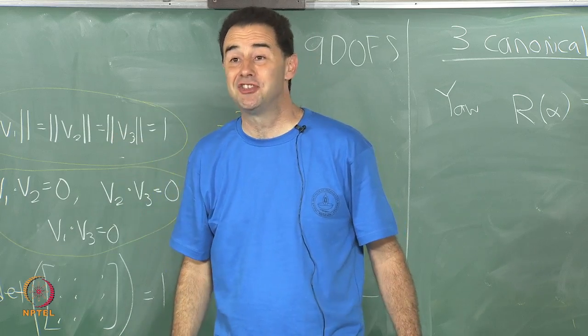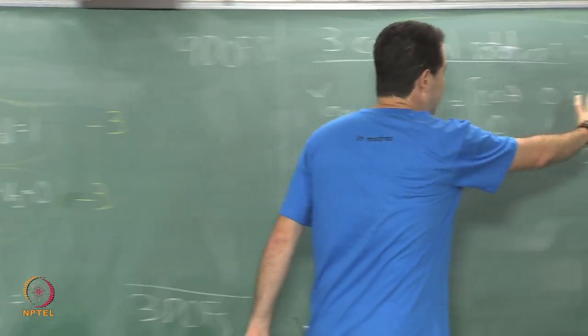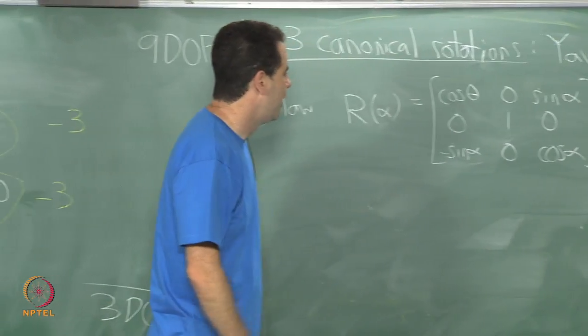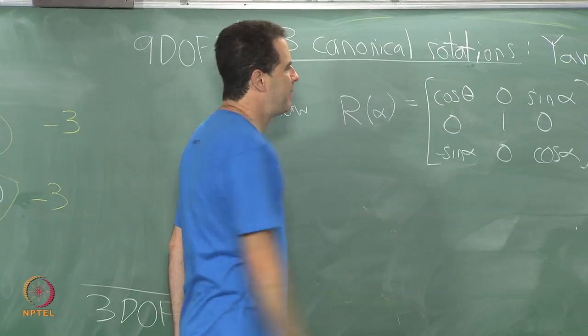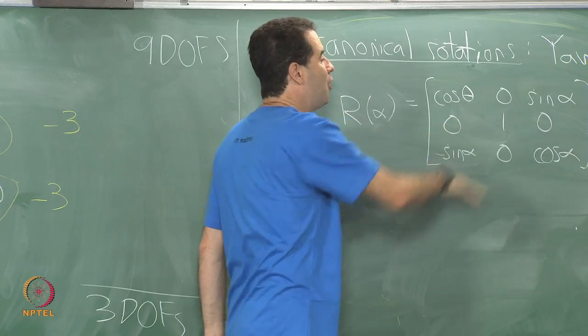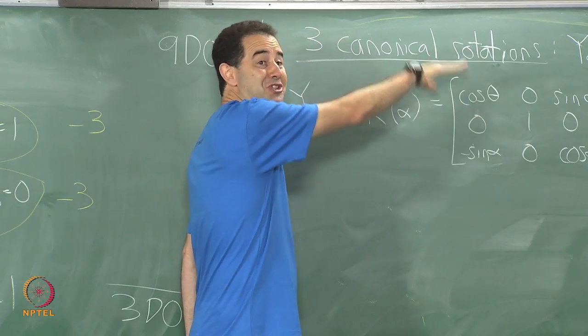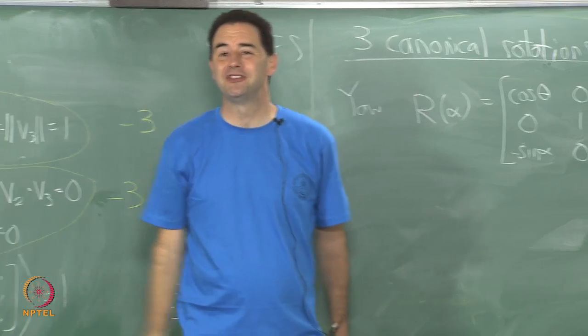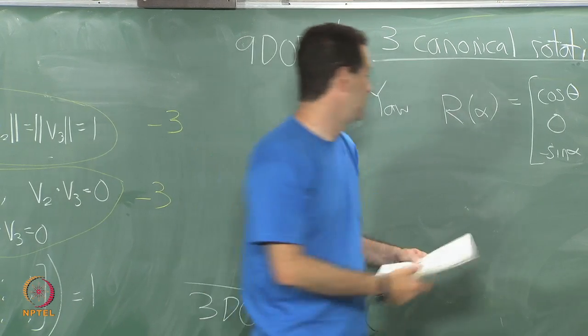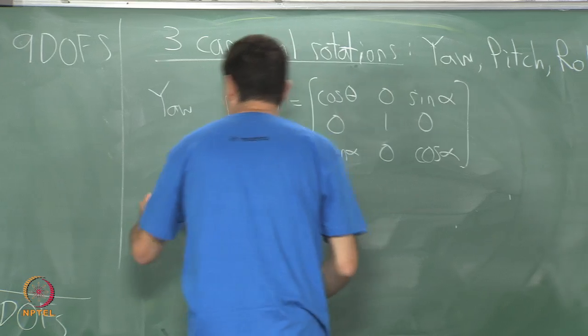The center part looks like identity matrix because it is basically saying do not disturb the y coordinate. If I do a yaw back and forth, notice that the y coordinate is not changing, right? Y is up. Notice y is not changing when I do this, correct, only x and z are. It is essentially a rotation in the x z plane. That is why it looks like the 2D rotation matrix.